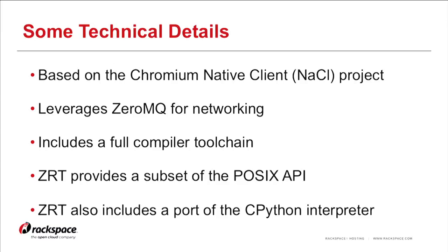We also have what we call the ZeroVM runtime, or ZRT. ZeroVM by itself provides a bare x86 execution environment. ZRT includes a port of glibc, a subset of the POSIX API, and an emulated in-memory file system, so you have something that starts to look like a system instead of just a bare process. It also includes a port of the CPython interpreter, so if you have Python code, you can pass it into a ZeroVM instance as a tarball and execute it using the CPython port already included in ZRT.